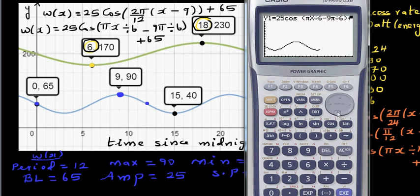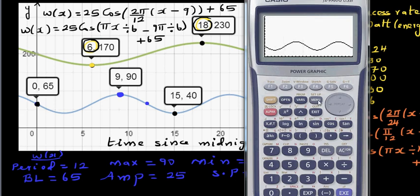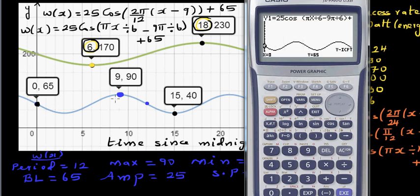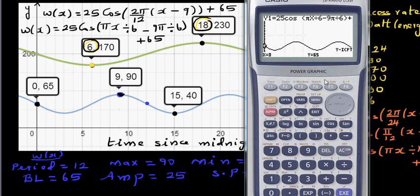The y-intercept is 65 — confirmed. G-solve shows maximum of 90 at 9 a.m. The minimum is at 3 p.m., which is hour 15, giving a minimum of 40. The next minimum is at hour 15 as well — confirmed.